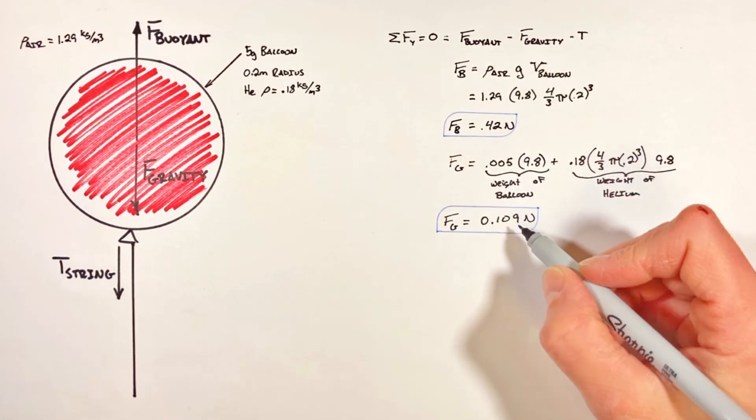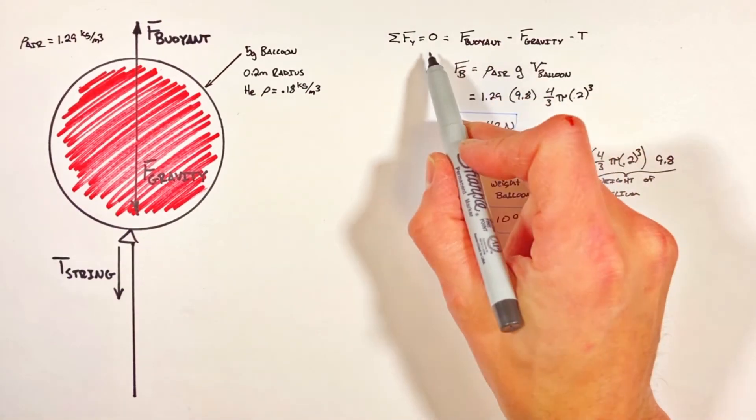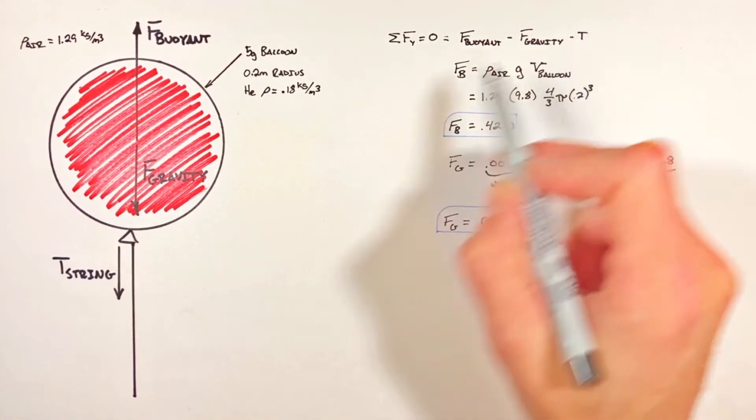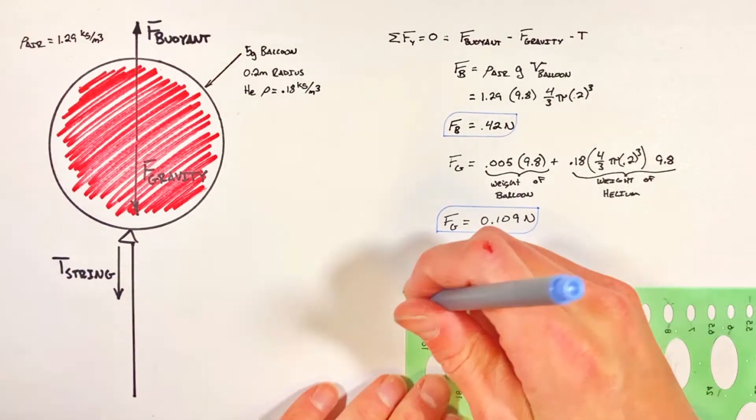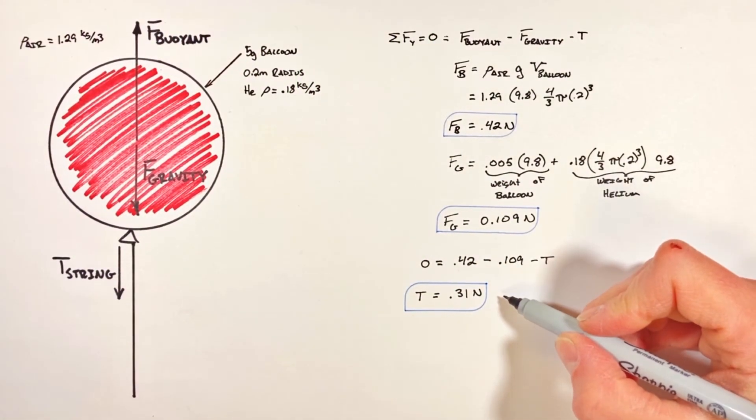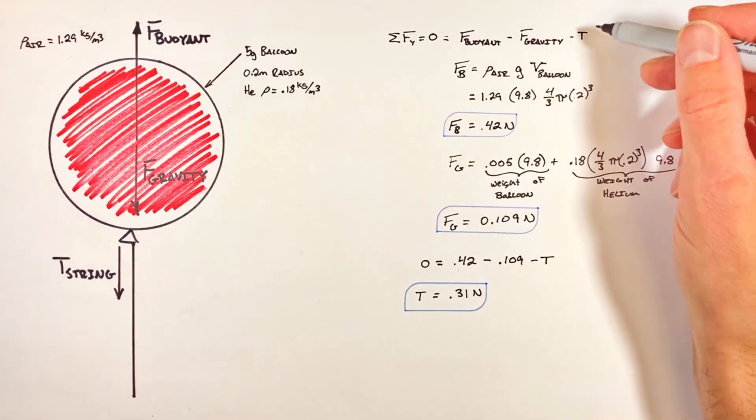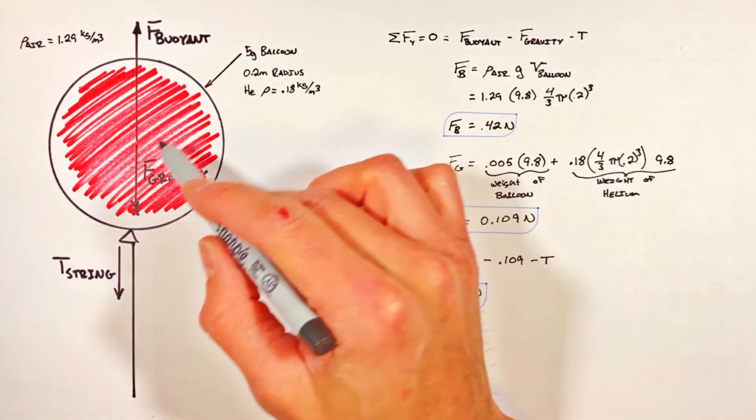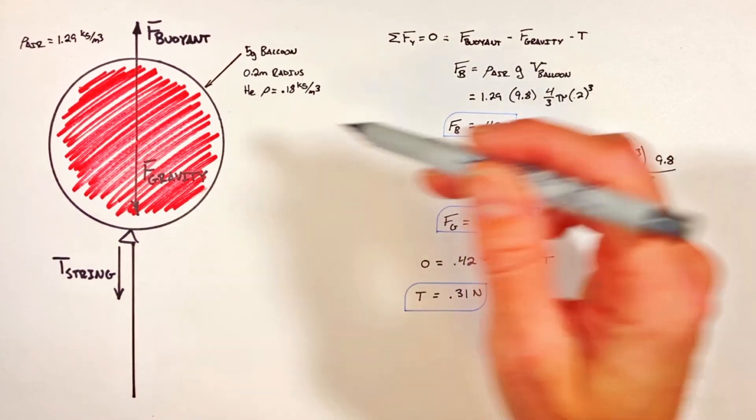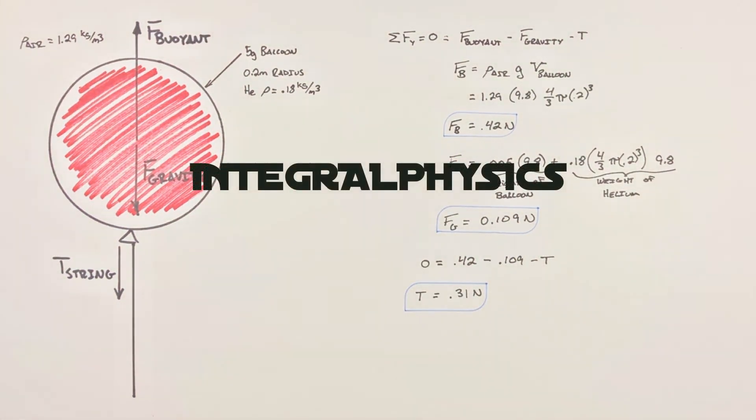Knowing both the buoyant force and the force of gravity, we can now solve for the tension in the string. We find the tension is 0.31 newtons. We've managed to solve for all the forces acting on this balloon suspended in the air, and that's all for now.